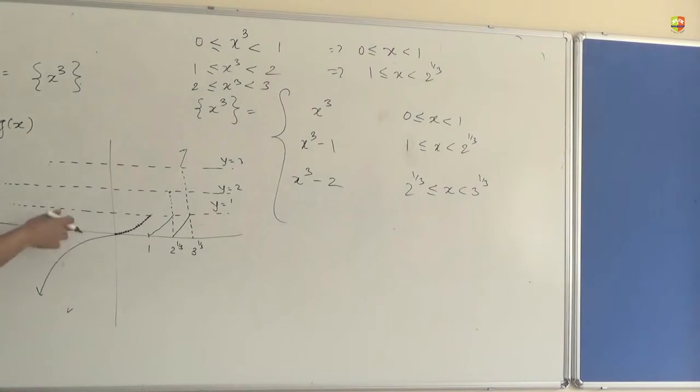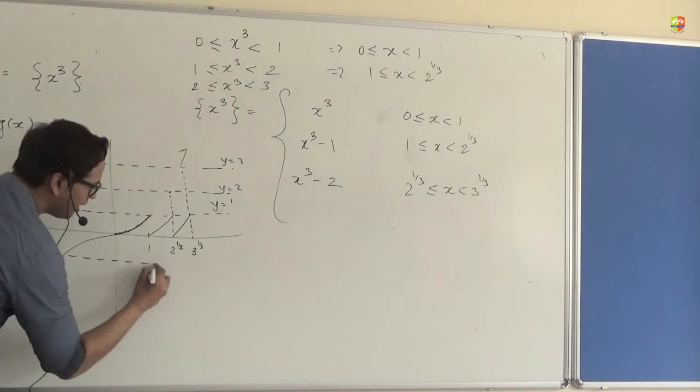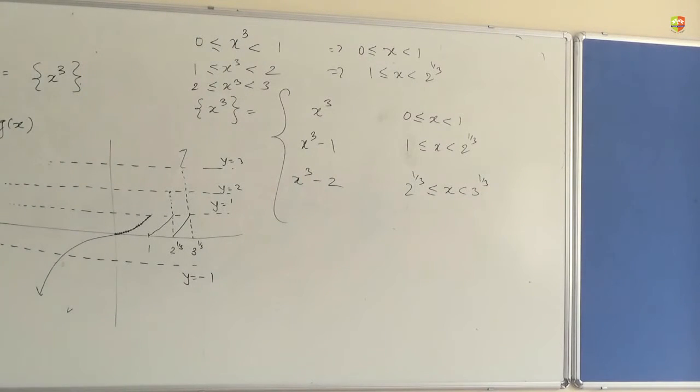What will happen on this side? The part which is between 0 and minus 1, what will happen to it? That means you are trying to say the fractional part of something can be negative also, which is not good. Fractional part is always between 0 and 1. What will happen to it? Mirror image. It moves up by how many units? One. One unit.